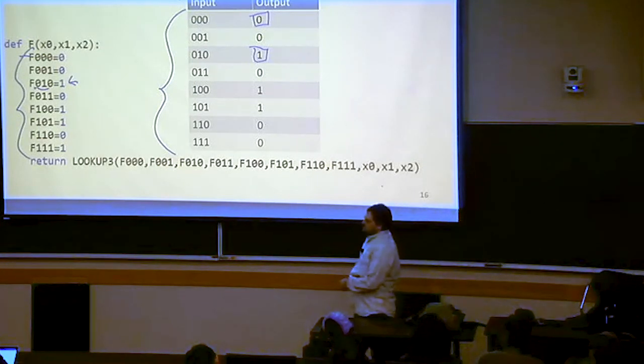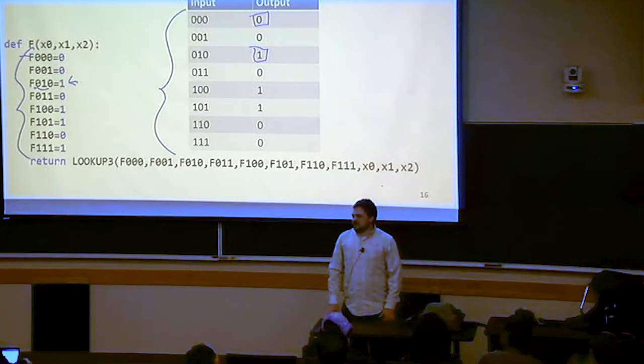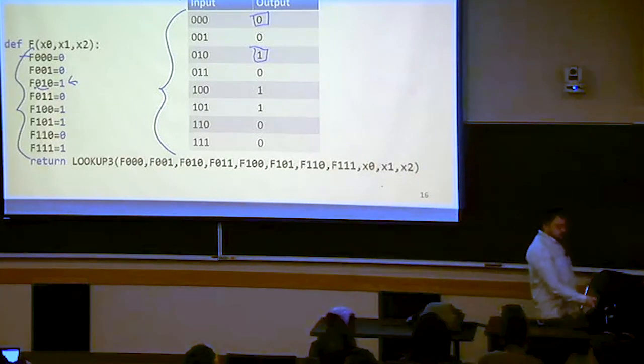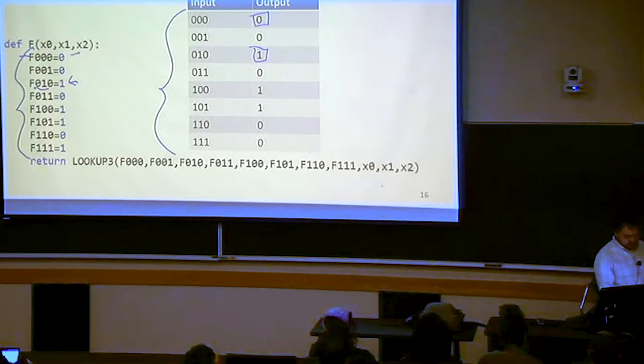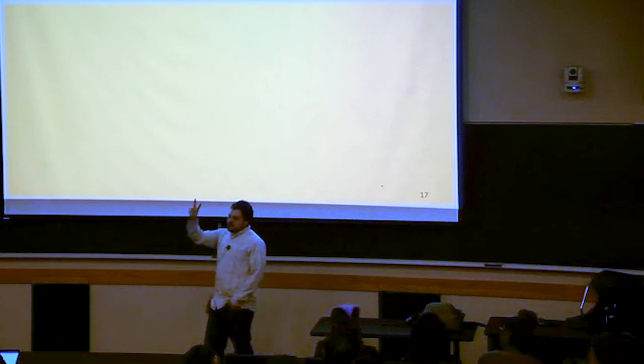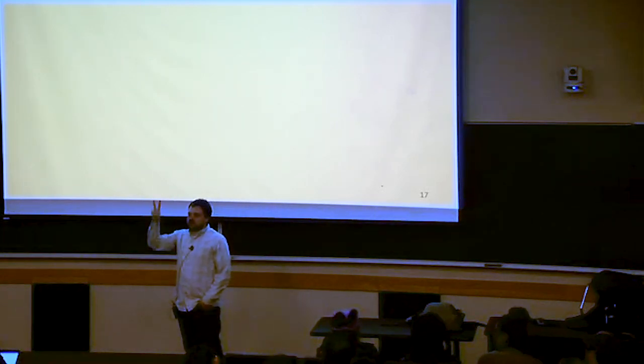So we need to somehow create a function where maybe the output we can just guarantee is always 0. And then we can invoke that function instead of getting 0. And then have another function where the output is always 1 and so forth. See if you can come up with functions, two functions, one whose output is always 0 and then a second whose output is always 1.